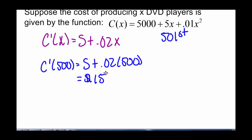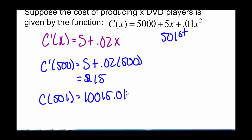Let's check how good our approximation was. The cost of producing 501 items is 5,000 plus 5 times 501 plus 0.01 times 501 squared. The cost of producing 500 items is 5,000 plus 5 times 500 plus 0.01 times 500 squared, which gives us $10,000. Subtracting these gives the actual cost of the 501st item to compare against our $15 derivative approximation.